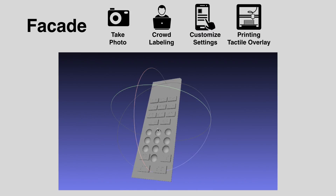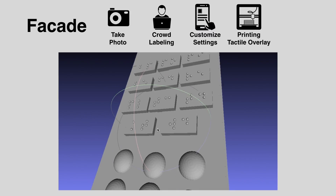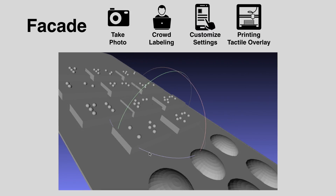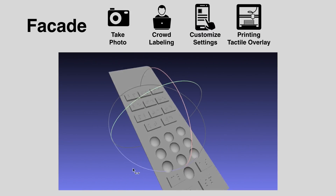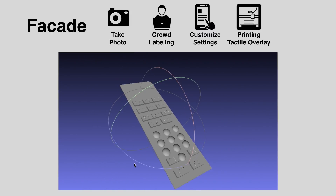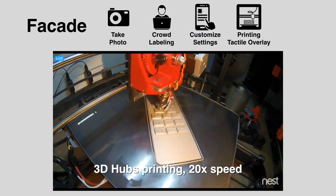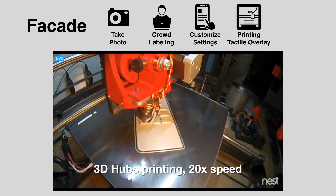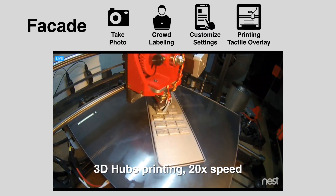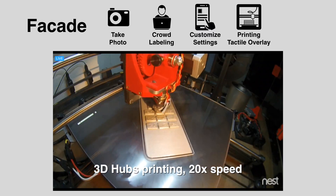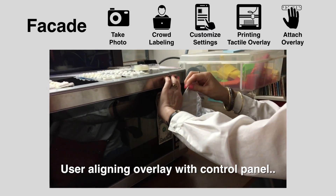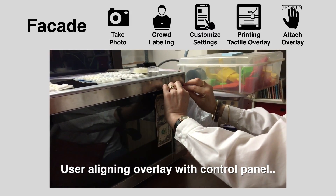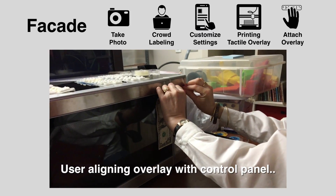These labels are then used to generate a 3D model for a layer of tactile and pressable buttons that fits over the original controls. Finally, a home 3D printer or printing service can be used to fabricate the layer. The printed overlay is designed to be easily aligned and attached to its appliance using adhesives.